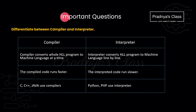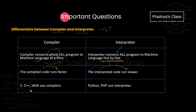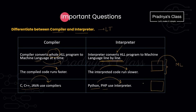The next question is the difference between compiler and interpreter — both are language translators. A compiler converts the whole high-level program to machine level at once, whereas an interpreter converts it line by line. Code that is compiled runs faster, but interpreted code runs slower. Languages like C, C++, and Java use compilers, whereas Python and PHP use interpreters.